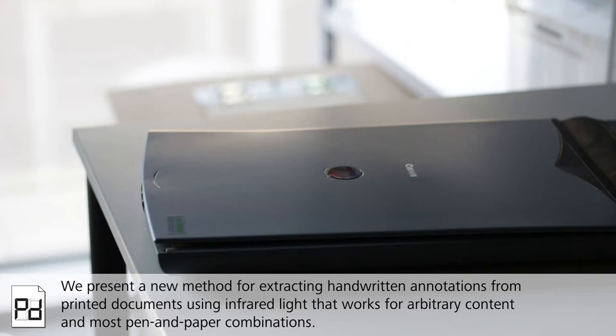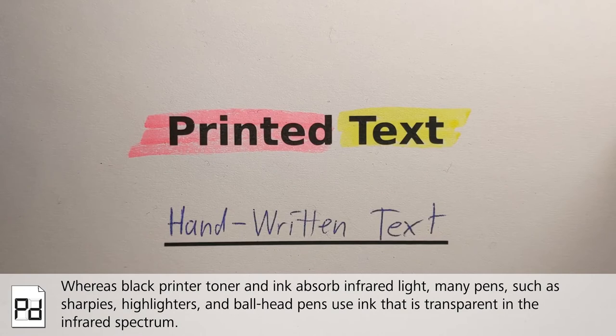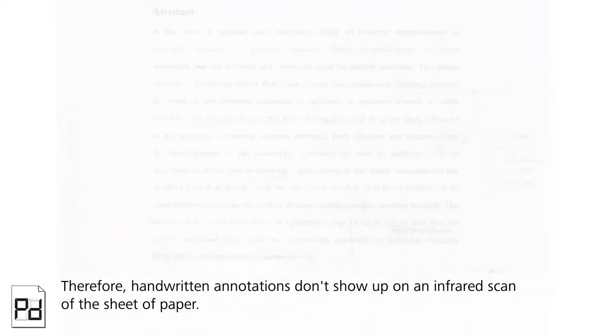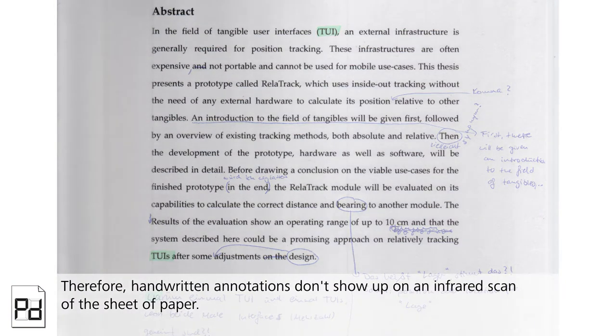for arbitrary content and most pen and paper combinations. How does it work? Whereas black printer toner and ink absorb infrared light, many pens such as Sharpies, highlighters, and ballpoint pens use ink that is transparent in the infrared spectrum. Therefore, handwritten annotations don't show up on an infrared scan of the sheet of paper.